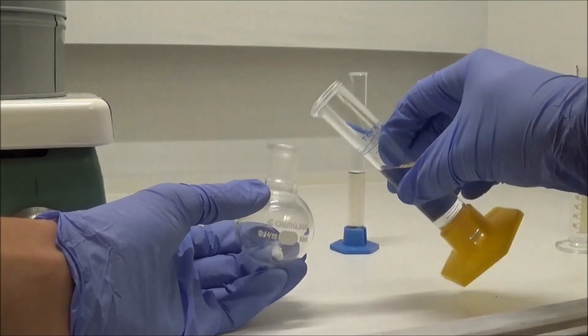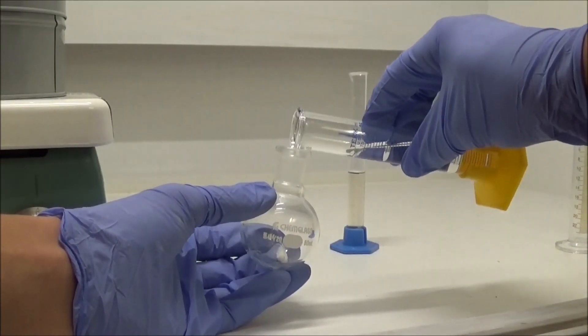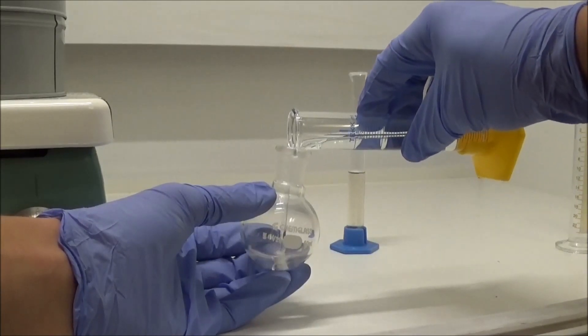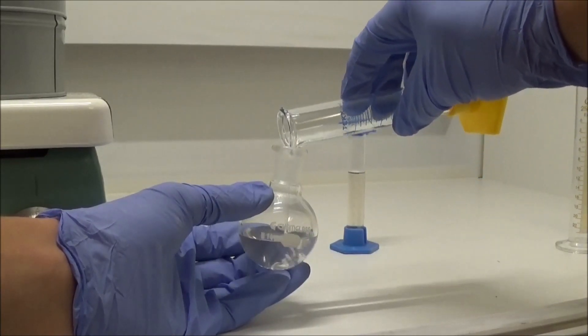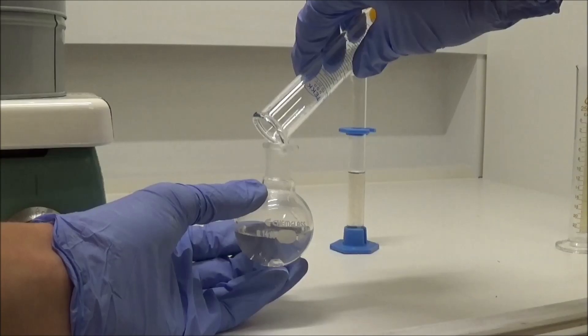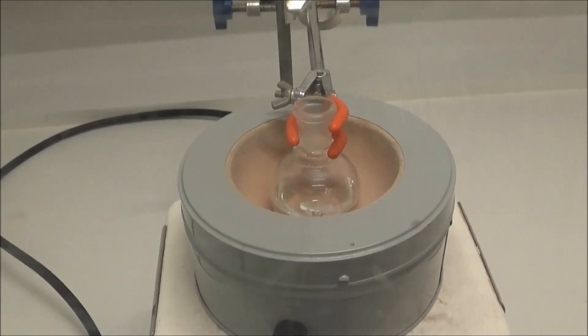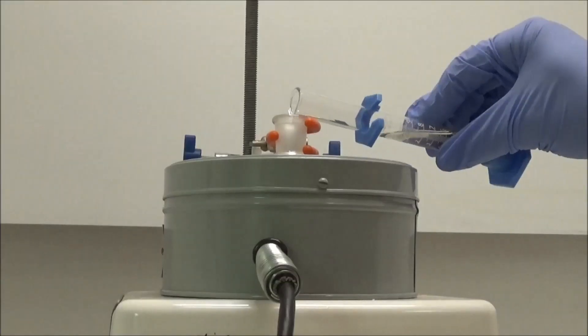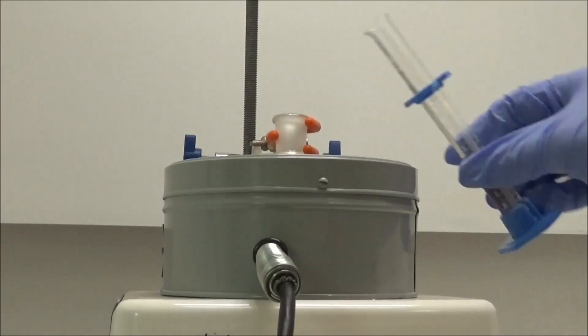I first added the hydrobromic acid to a 50 milliliter round bottom flask. Next, I stirred the mixture while slowly adding 4.1 milliliters of concentrated sulfuric acid.